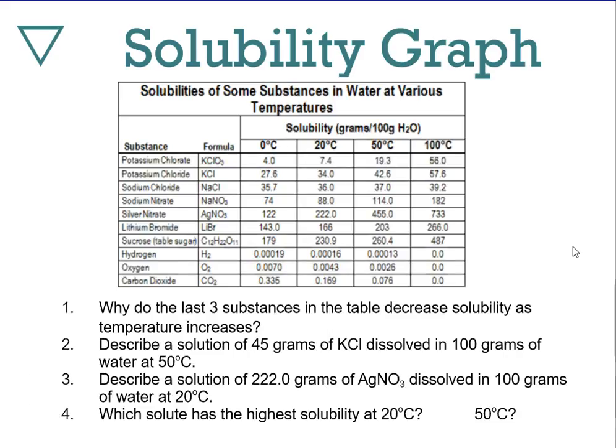This tabular data will be put into graphs on the next few slides, but it's important to be able to decode it as a table too, since not all questions will be graphic — some will use data tables. The table shows solubility of common substances in water at various temperatures. You'll see ionic compounds, sugar (a polar covalent compound), and gases — hydrogen, oxygen, and carbon dioxide — measured at four benchmark temperatures.